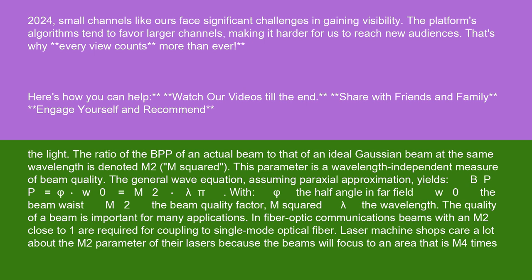The ratio of the BPP of an actual beam to that of an ideal Gaussian beam at the same wavelength is denoted M², M squared. This parameter is a wavelength-independent measure of beam quality. The general wave equation, assuming paraxial approximation, yields BPP equals phi W0 equals M² lambda pi, with phi the half angle in far field, W0 the beam waist, M² the beam quality factor, and lambda the wavelength.